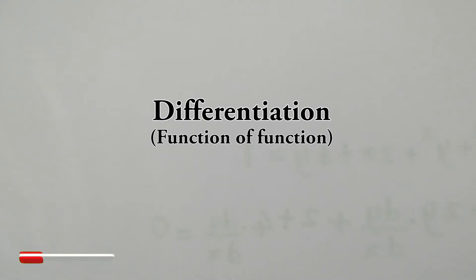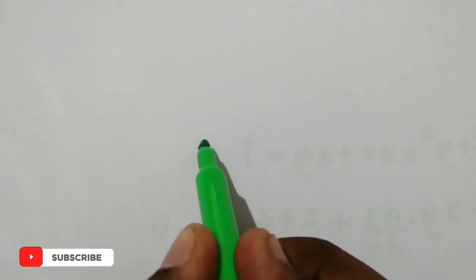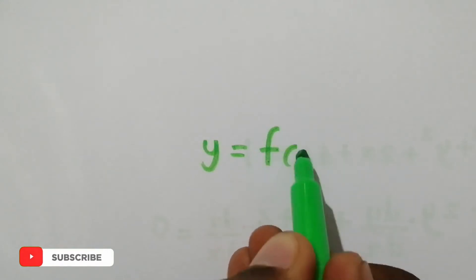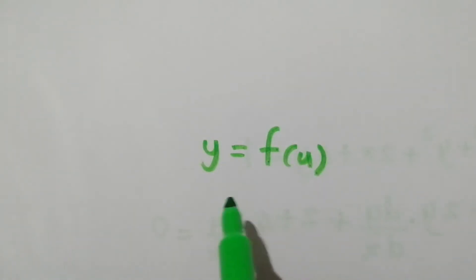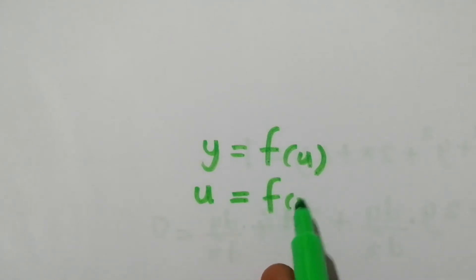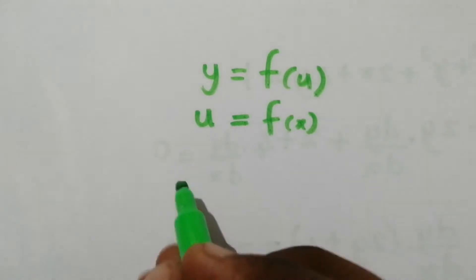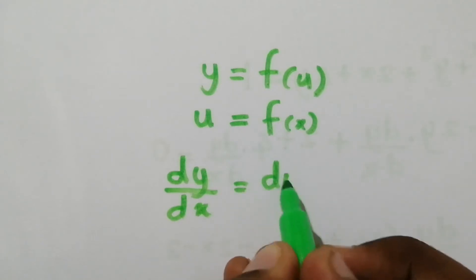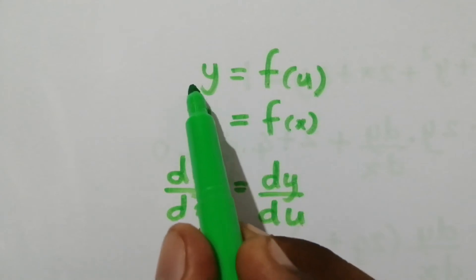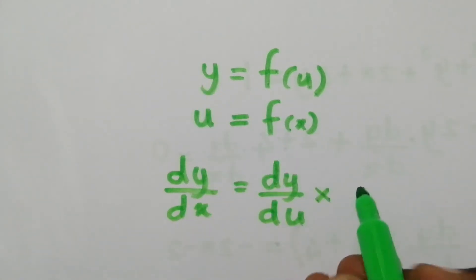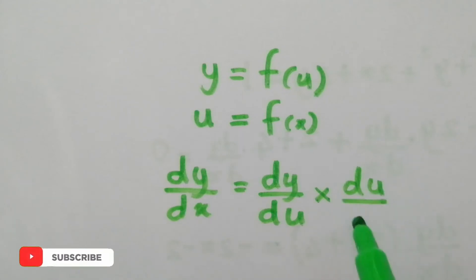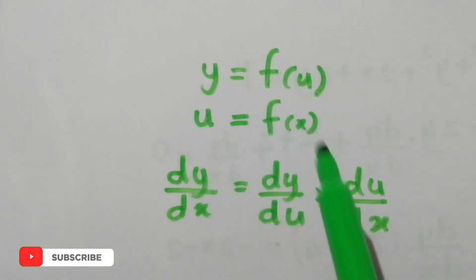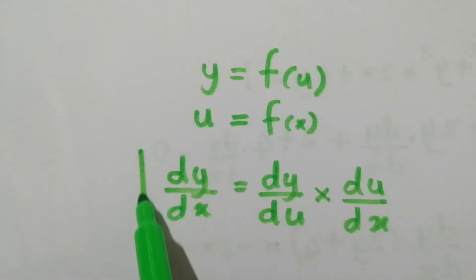Now let's move to the next part: the differentiation of a function of a function. If y is a function of u, we write it as y = f(u), and u is a function of x, written as u = f(x). Then we can write dy/dx as dy/du times du/dx — the differentiation of y with respect to u, times the differentiation of u with respect to x. This is known as the chain rule.